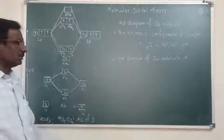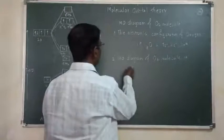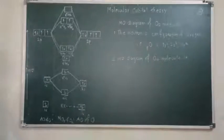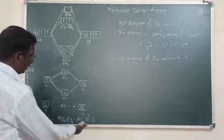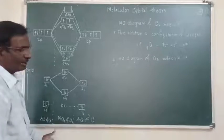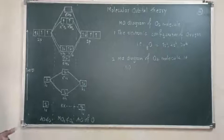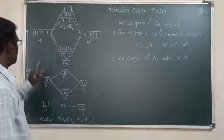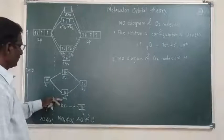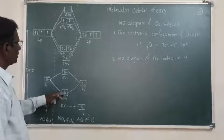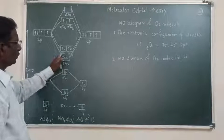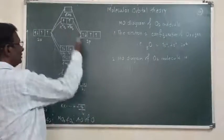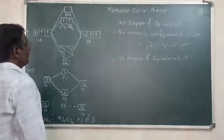From the diagram, first point: atomic orbitals and molecular orbitals are arranged in the increasing order of their energy — 1s, then 2s, then 2p. The complete sequence is: KK, sigma 2s, sigma star 2s, sigma 2px, pi 2py, pi 2pz, pi star 2py, pi star 2pz, and lastly sigma star 2px.